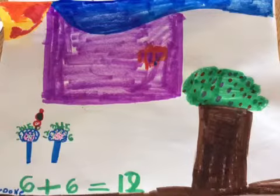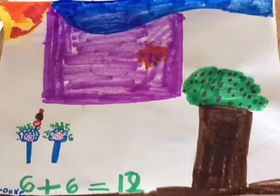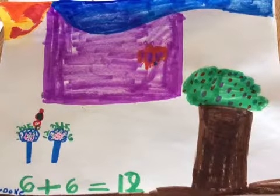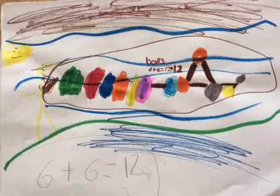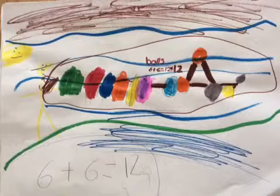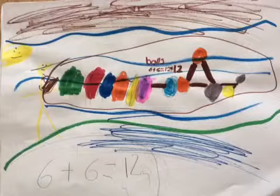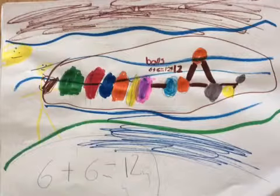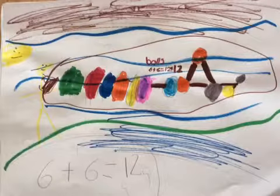My number was six plus six equals twelve. I made flowers that have six petals. My number is six plus six equals twelve. I have six groups of balls and six more groups of balls. And that's twelve balls. So, that equals twelve.